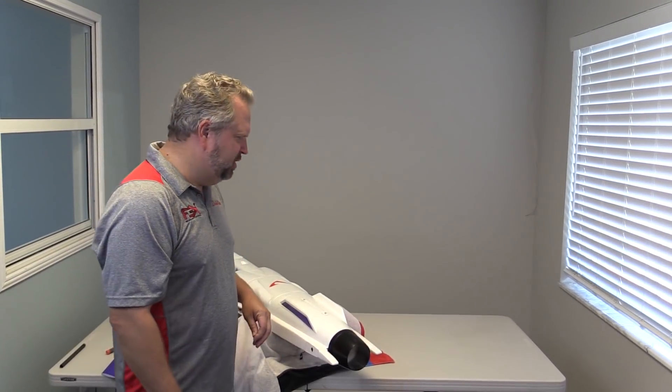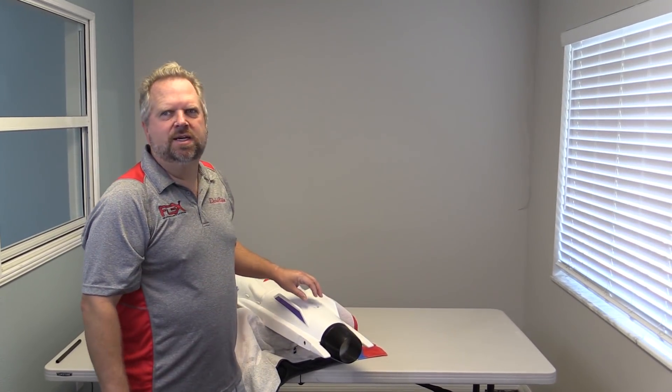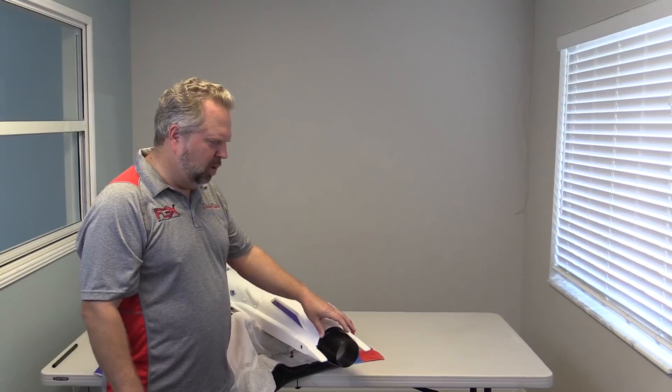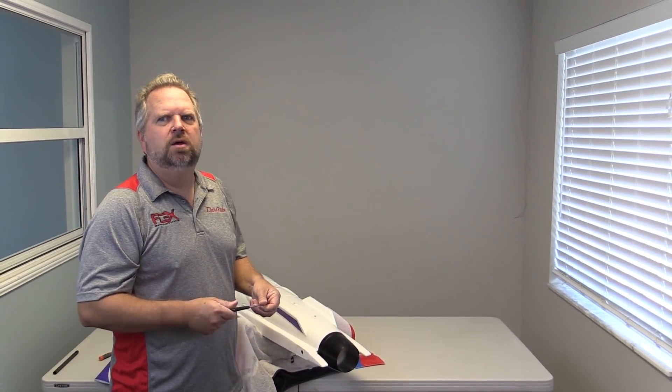Alright, we have the FlexJet here. This is a prototype so the ventral fin is already on it, but we're going to access the tail of the model. It comes installed with the parts. We're going to disassemble it a bit in order to show you how to install the stabs and other components.